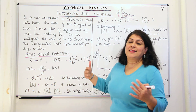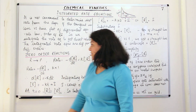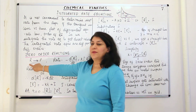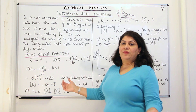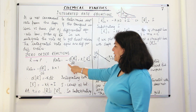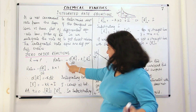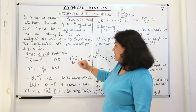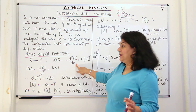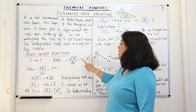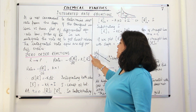Let us understand this better. I will explain zero order reactions in this video. For a zero order reaction, let us assume there is a reactant that proceeds to form a product P. The rate of the reaction is represented by the differential rate equation: minus dr/dt equals k times r to the power zero, where the minus sign indicates the reactant concentration is decreasing.